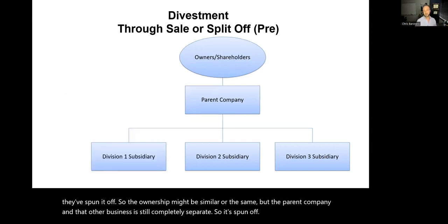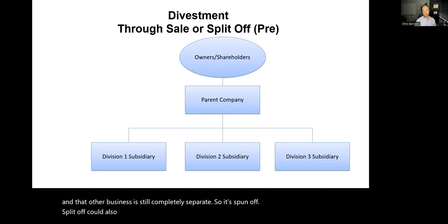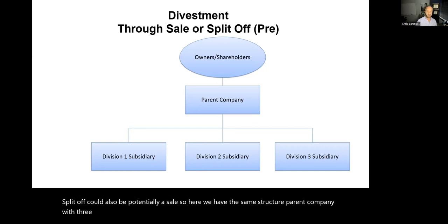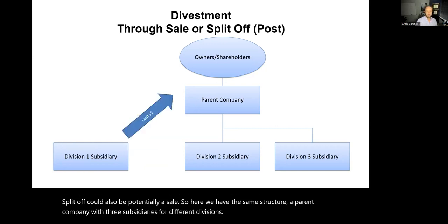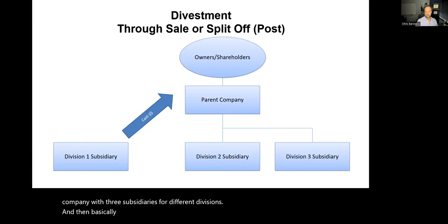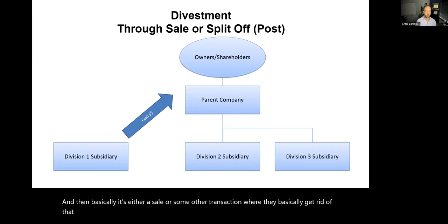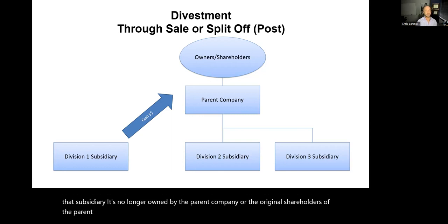A split-off could also be potentially a sale. Here we have the same structure — a parent company with three subsidiaries for different divisions. Basically, it's either a sale or some other transaction where they get rid of that subsidiary. It's no longer owned by the parent company or the original shareholders of the parent company. It's completely separate and no longer part of the company.